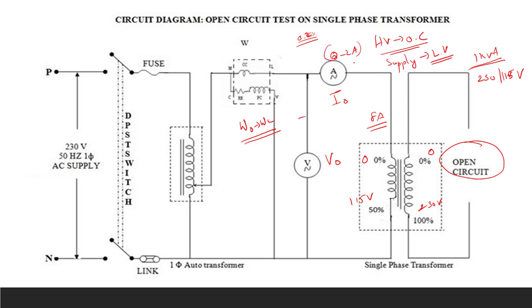We are using an AC MI (moving iron) ammeter of 0 to 2 amps since AC is applied. For voltage, we are going to apply the rated voltage of 115 volts, so in our lab we will have a voltmeter in the range of 0 to 150 volts MI.